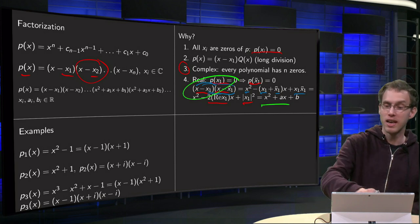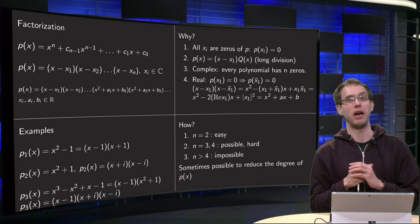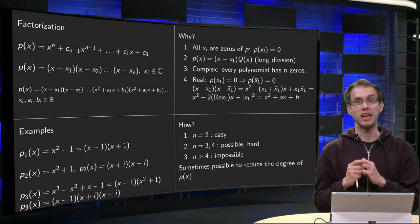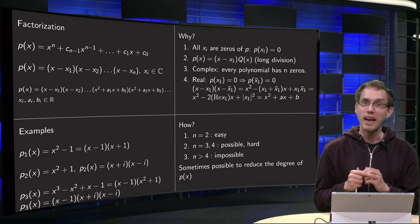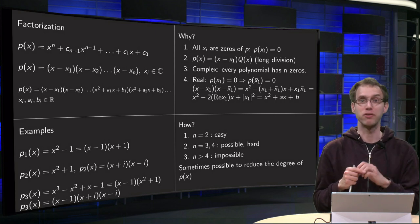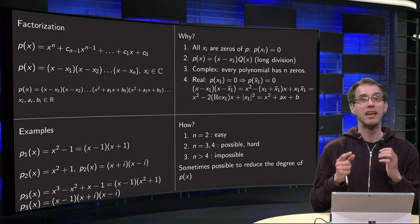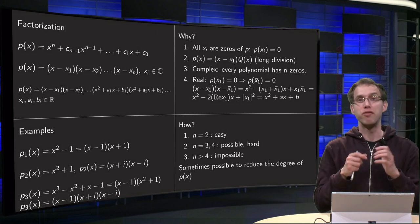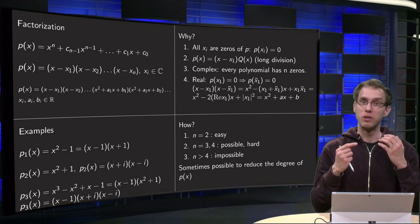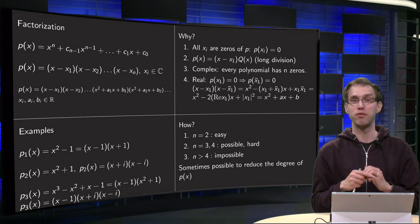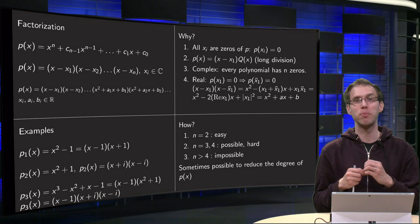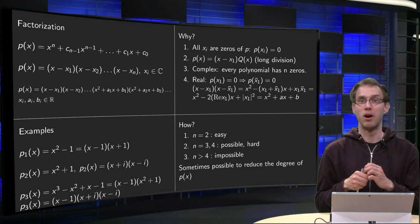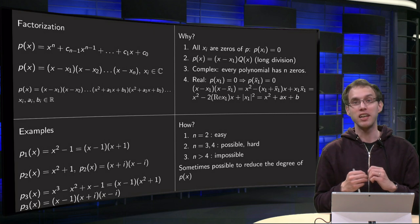That's why you can factorize like this. How are we going to do it in practice? For n = 2, second-degree polynomials, it's easy. For n = 3 and 4 there are formulas, but they are already quite hard. For n greater than 4, we can even prove that it is impossible in general. However, even for bigger cases it is sometimes possible to reduce the degree of the polynomial, because the degree determines how hard it is to factorize. In later examples we will see how to do this explicitly.